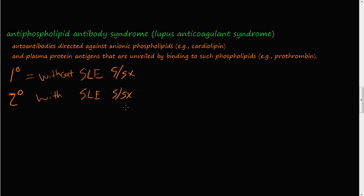The second condition is the antiphospholipid antibody syndrome, also called lupus anticoagulant syndrome. What happens here is there are autoantibodies — it's an immune disease, but not because of some drug. Your immune system creates antibodies directed against anionic phospholipids or cardiolipin, or more accurately described as plasma protein antigens. This is a type of syndrome that causes thrombosis or blood clot formation because your immune system is creating antibodies against these anionic phospholipids, e.g. cardiolipin.